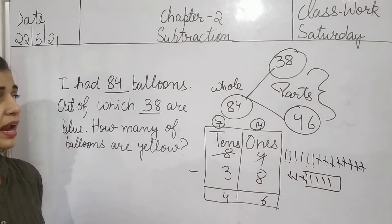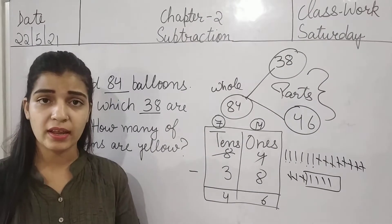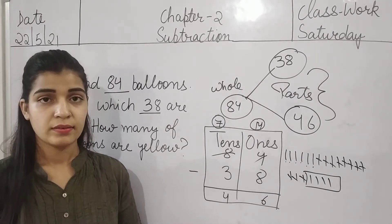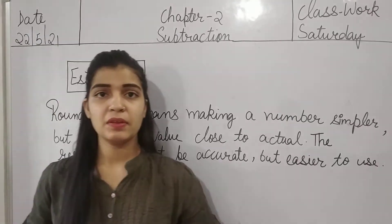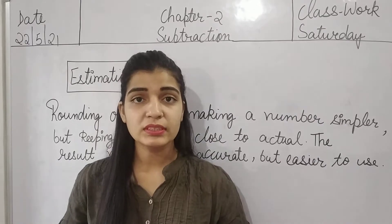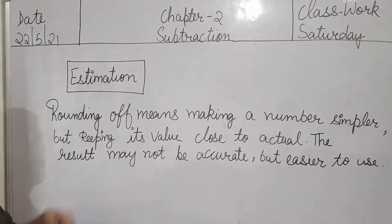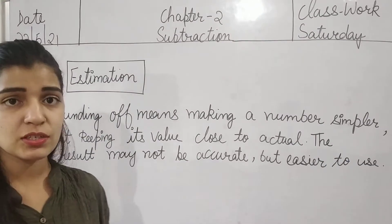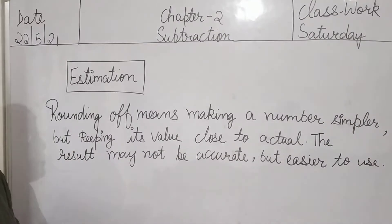I don't think any of you have a doubt up to here, students. We have done many questions of Number Bond and story sums too. So we have done the previous topic — that was Number Bond — and some story sums of Number Bond. Now look at our new topic, and the topic is Estimation — E-S-T-I-M-A-T-I-O-N. Estimation. We have also done estimation in addition, but today we will do estimation in subtraction.